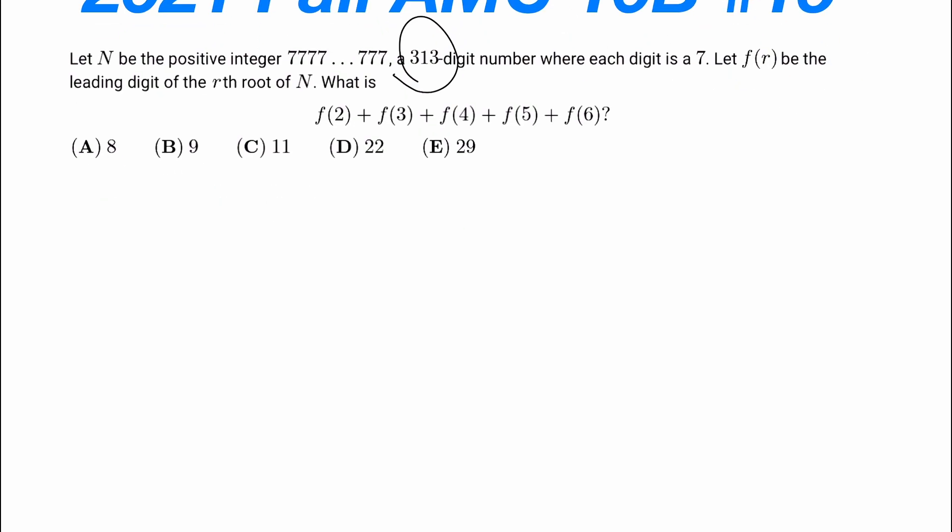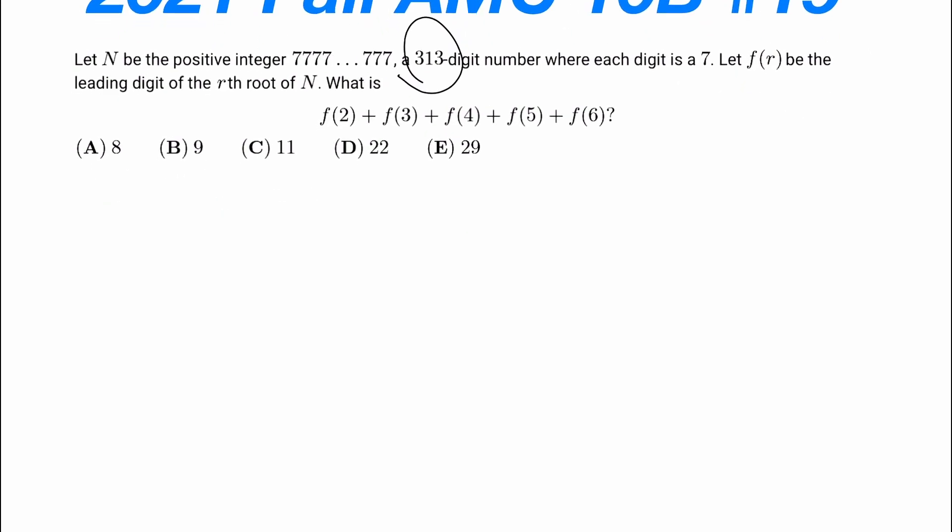Now if we think about it, let's say if we have the number 27, if we divide that number by 10, we get 2.7. The leading digit of that 27 is 2. The leading digit of 2.7 is also 2. So in base 10, if we divide some number by 10, the leading digit doesn't change.